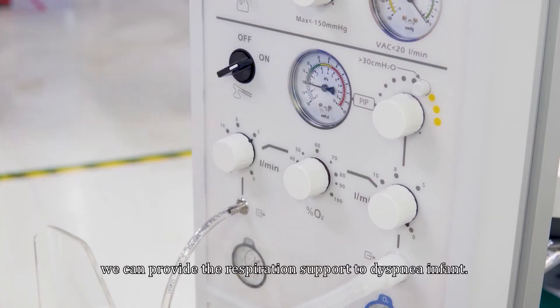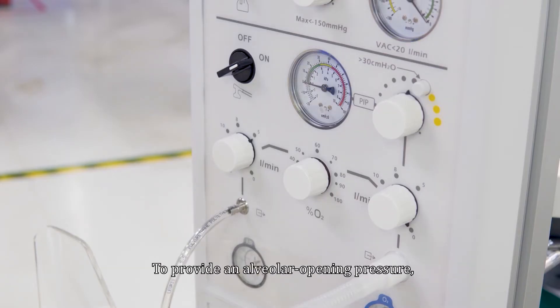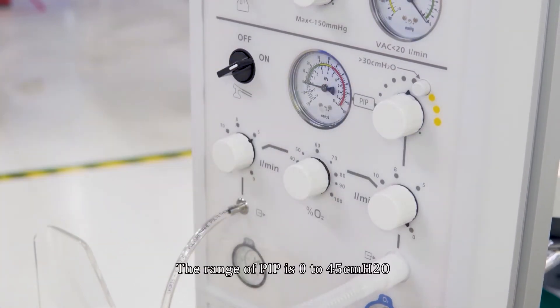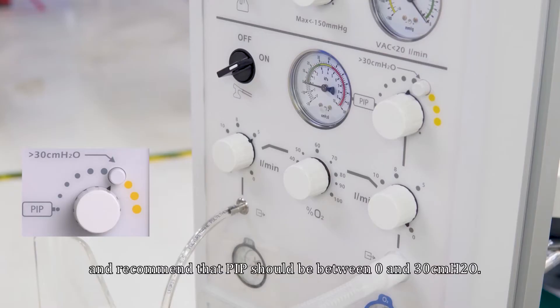Upon startup, we can provide respiration support to dyspnea infant. To provide an alveolar opening pressure, set desired PIP value. The range of PIP is 0 to 45 centimeters of water, and recommend that PIP should be between 0 and 30 centimeters of water.